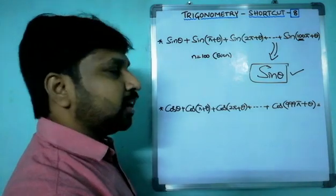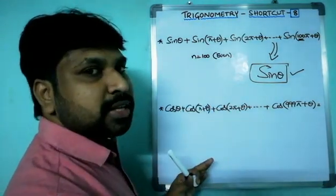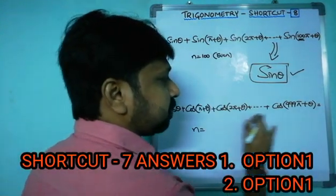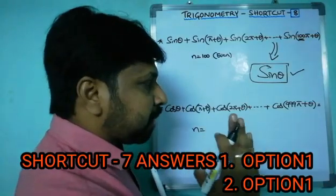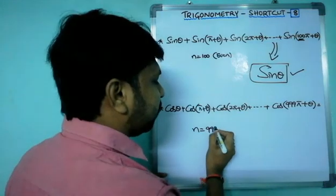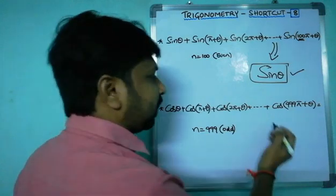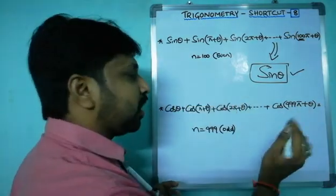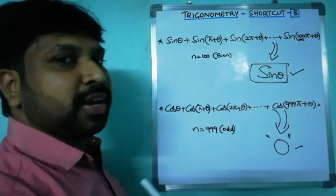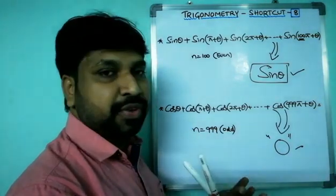Next: cos theta plus cos(pi plus theta) plus cos(2pi plus theta) plus ... plus cos(999pi plus theta). No need to think about everything — just look at n equals 999, which is an odd number. Whenever n is odd, in either cos or sin, the result is zero. That is all the answer. By this logic, the problem is very very easy.